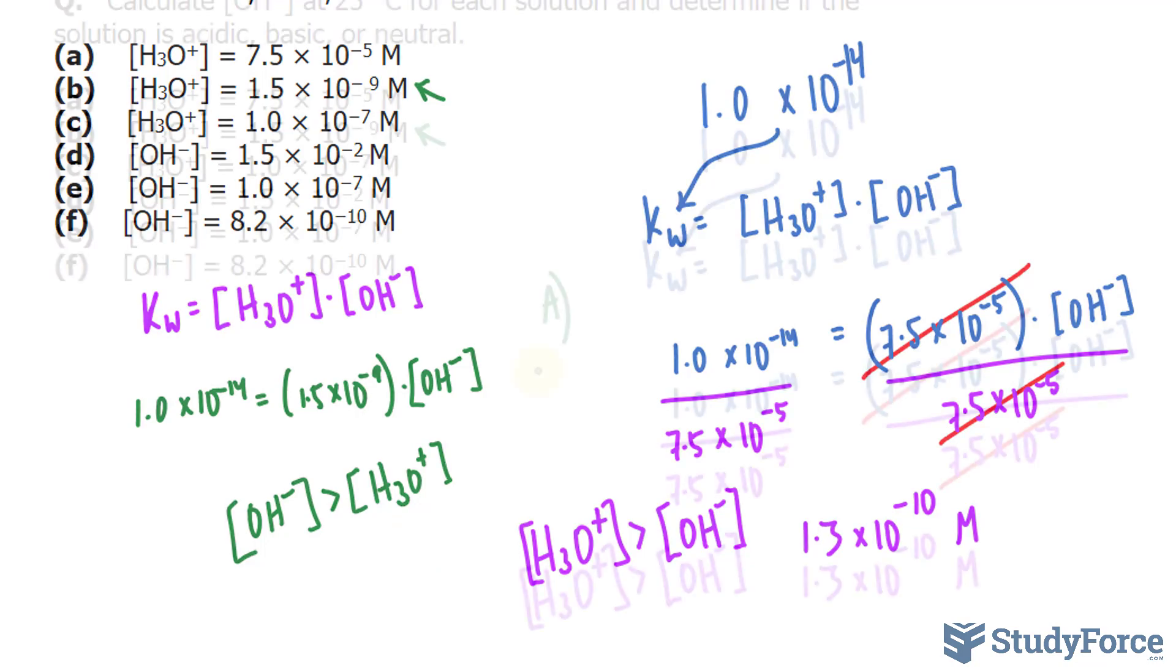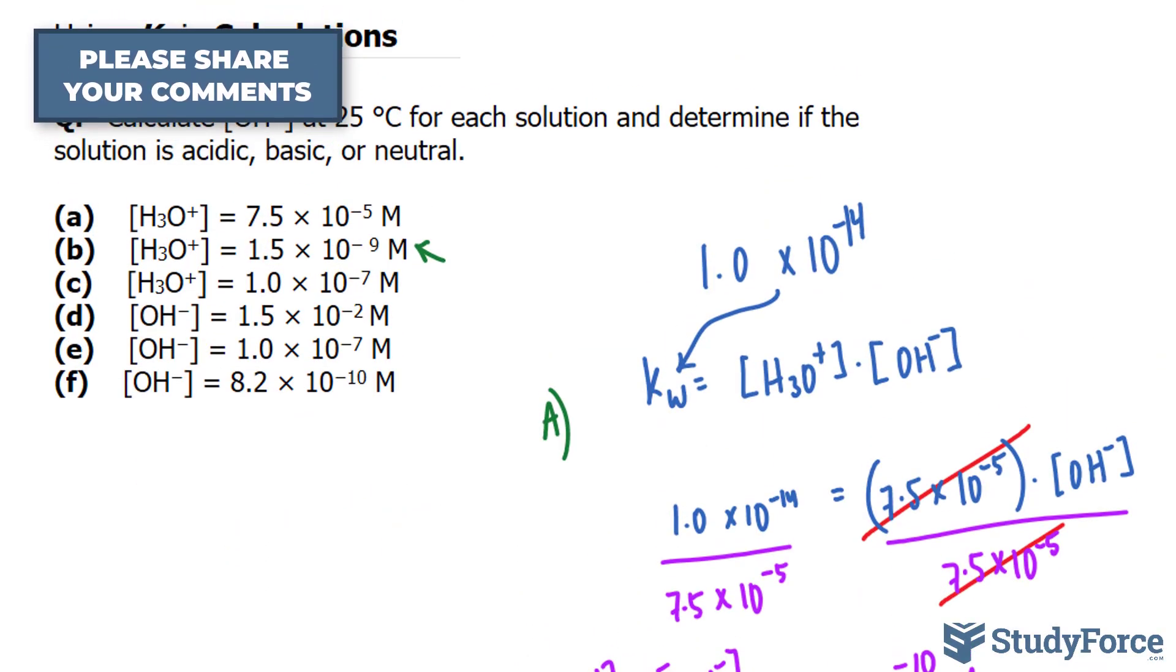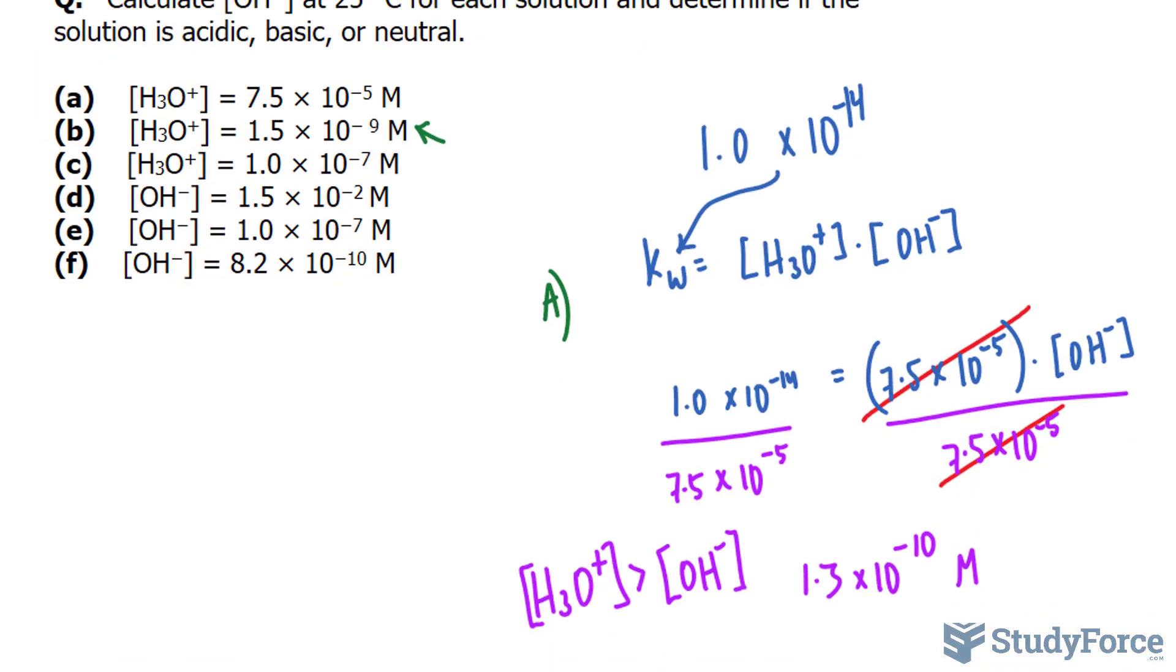Let's move on to question C. Once again, we need to find out if the solution is acidic, basic, or neutral. And I have a feeling that this one is going to be neutral. Let's find out. Kw is equal to this number, so I'll write it right away.